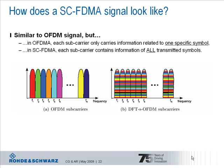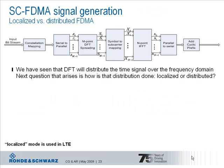By performing DFT precoding, we shift around the problem of high amplitudes due to subcarriers being in phase.